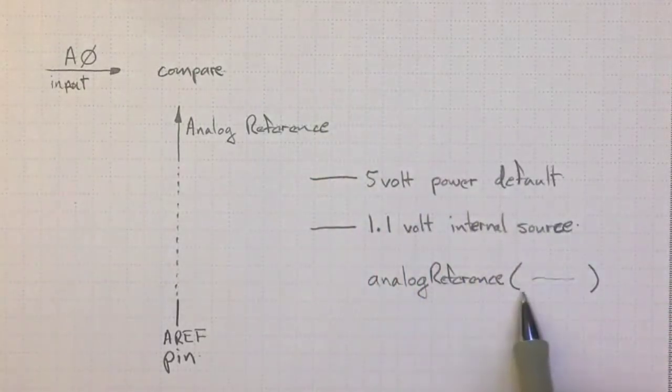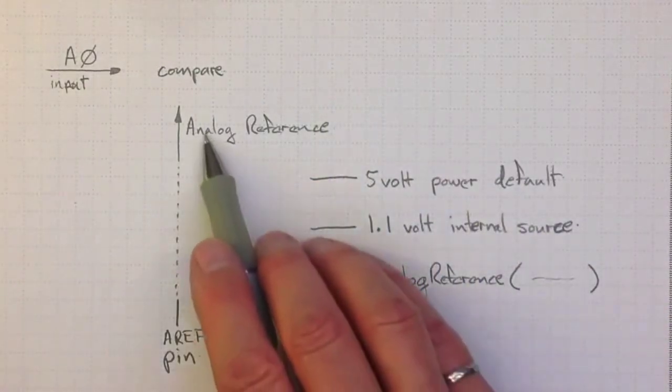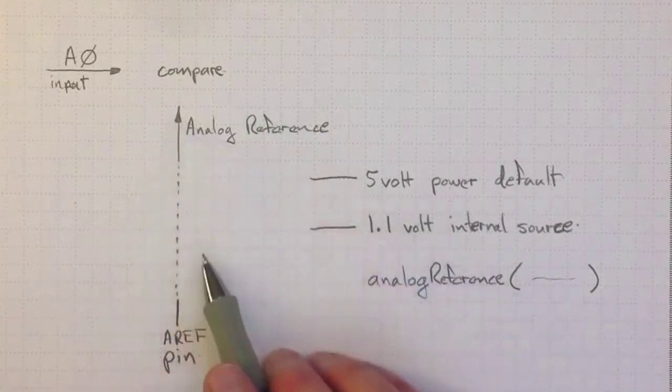The analog reference function call lets you pick what the Arduino will use for this analog reference voltage.